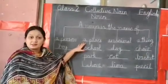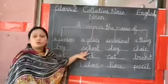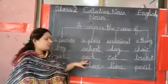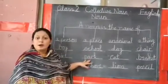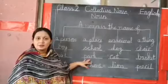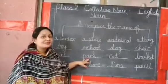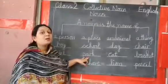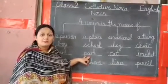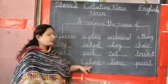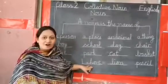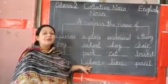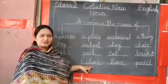A place. School — your school is a place. Park — it's your turn. Park is a place. Lahore. Lahore is a place. Very good students.